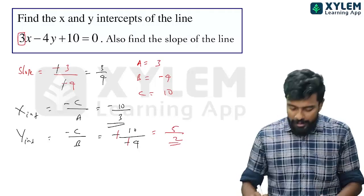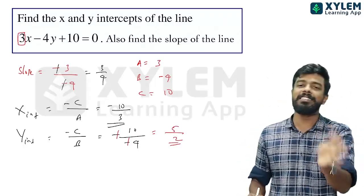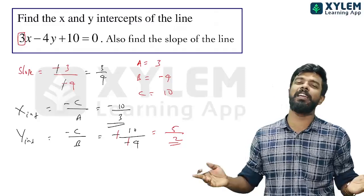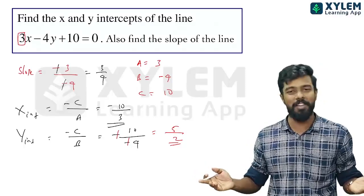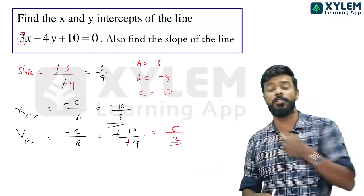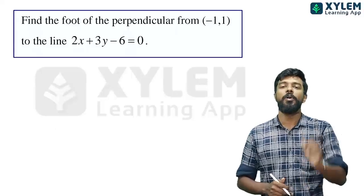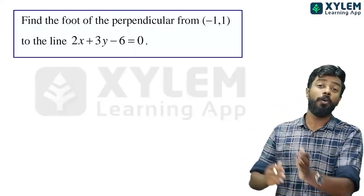So slope is 3 by 4, x-intercept is minus 10 by 3, and y-intercept is 5 by 2. That's all. You just need to remember the formulas at the end.